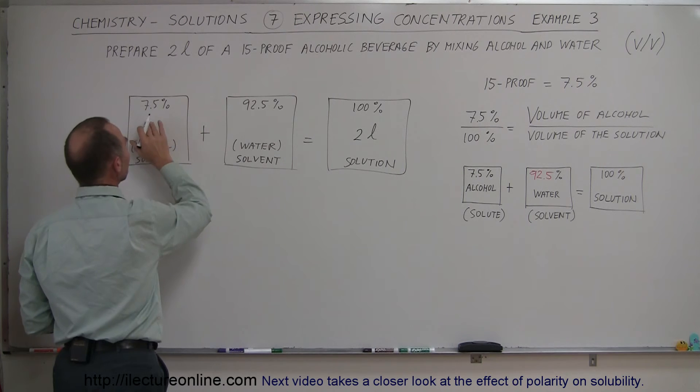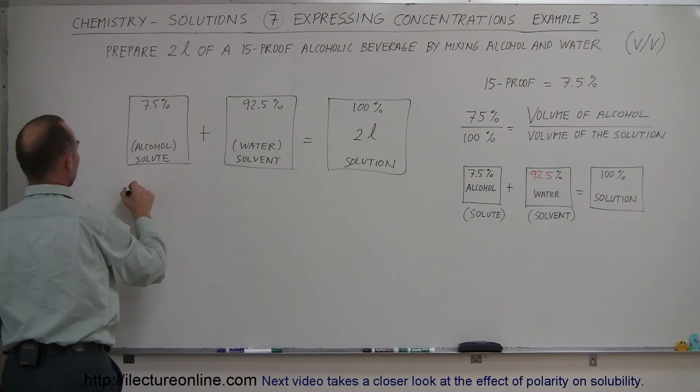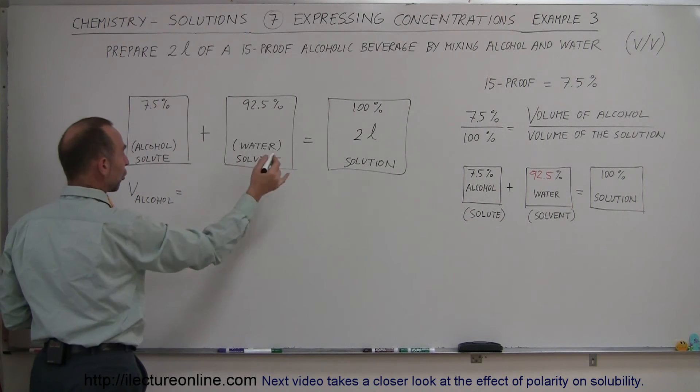To get the amount in each case, we simply multiply the percent times the total.